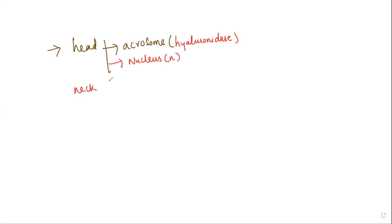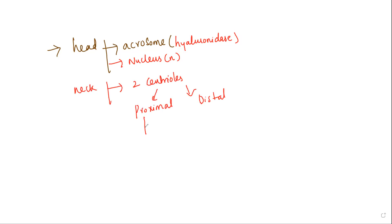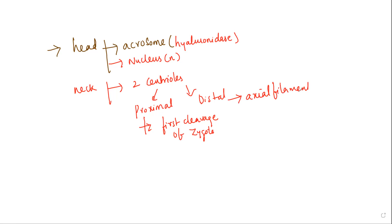Next we have the neck. In the neck, it is going to have two centrioles — one is going to be a proximal centriole and the other is going to be a distal centriole. The proximal centriole plays a very important role in the first cleavage of the zygote. The distal centriole is going to form the axial filament that is present in the tail of the sperm.